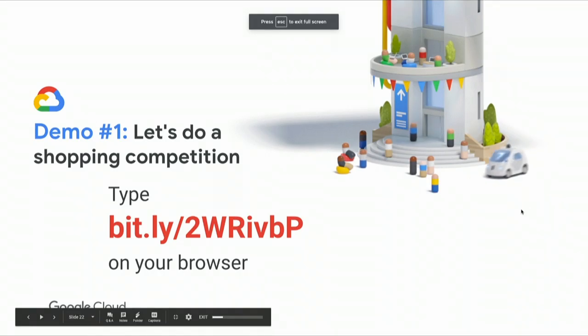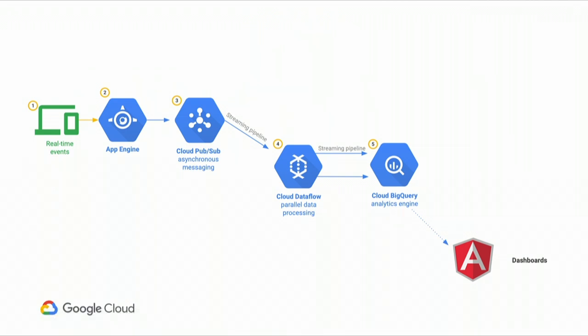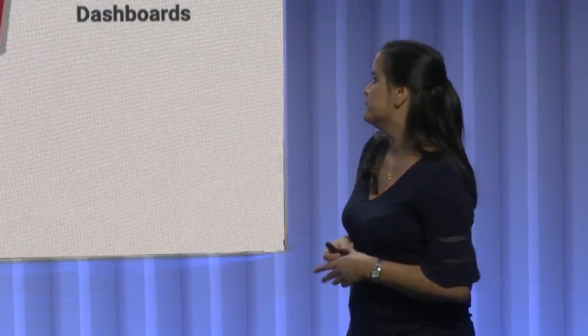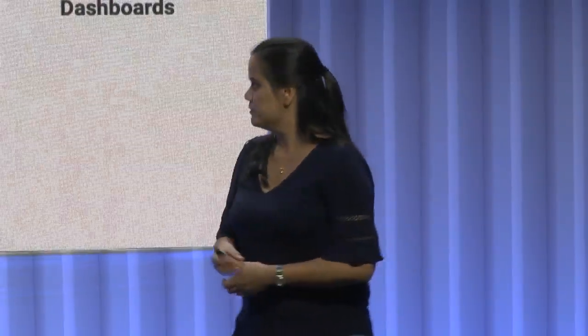To recap what we just did: we read real-time events from your mobile devices using an App Engine front end, which scaled up to meet demand. When Akhilash showed the last screen, he was injecting a large number of extra events from a robot. Those were published to a Cloud Pub/Sub topic, read through Cloud Dataflow, which processed them in parallel in real time with latency of just a couple of seconds, and published them to BigQuery. From BigQuery we presented the leaderboard dashboard on screen.